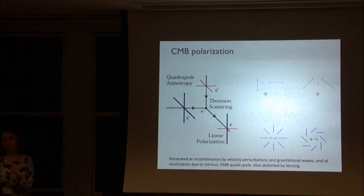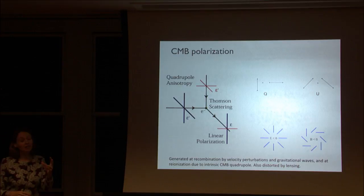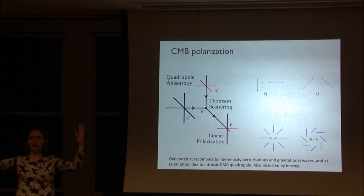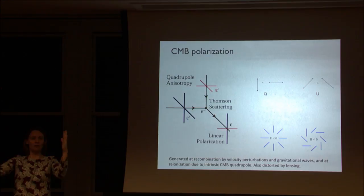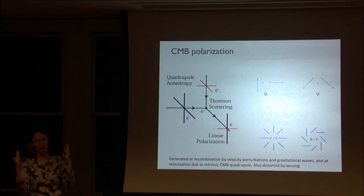One thing we can do to learn more is look at the polarization of the CMB light. We've been measuring the intensity of photons, but we can also measure their preferred orientation and degree of polarization. We expect the CMB to be polarized because you can only get a polarized photon if you have scattering of free electrons in a specific quadrupole pattern — hot light coming from two sides and cold light from above and below.